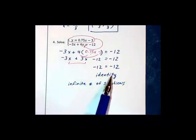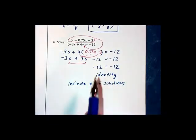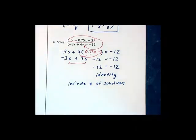Had this been a false statement, such as 8 equals negative 12, we would have had no solution at all. So true statement means infinite solutions, false statement or contradiction means no solution.